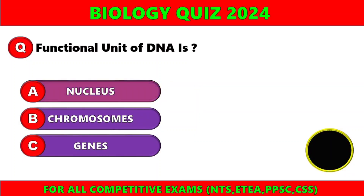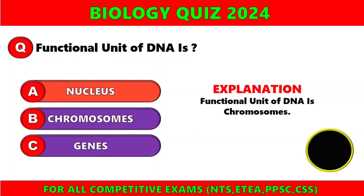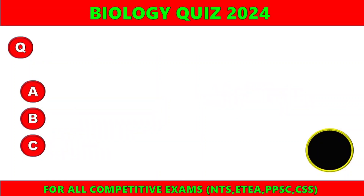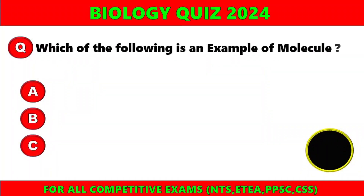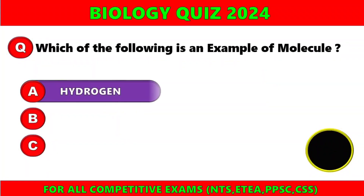Functional unit of DNA is a) nucleus, b) chromosomes, c) genes. The right answer is option B — chromosomes. The functional unit of DNA is chromosomes, not nucleus.